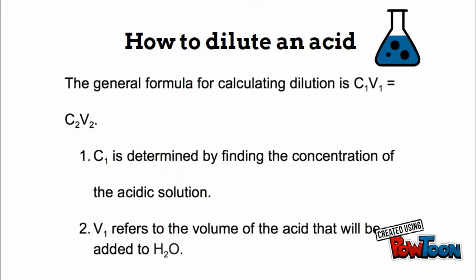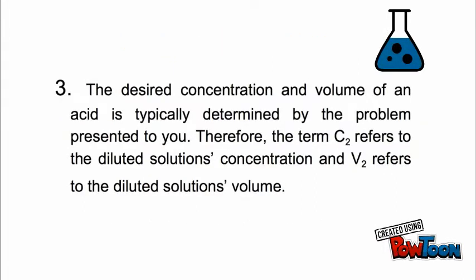The general formula for calculating dilution is C1V1 = C2V2. C1 can be determined by finding the concentration of the acidic solution. V1 refers to the volume of the acid that will be added to H2O. The desired concentration and volume of an acid is typically determined by the problem presented to you.